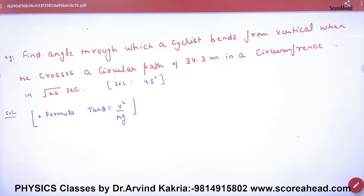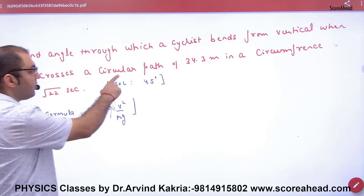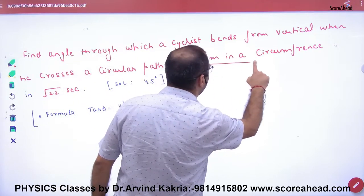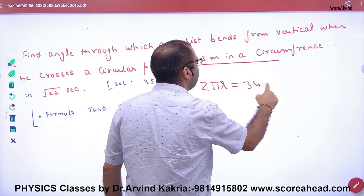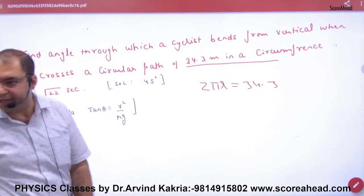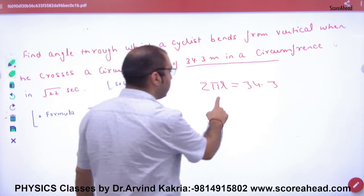So, bending of cyclists. And what is given? Circular path of 34.3 circumference. Circumference means what is given? 2 pi r. What is step clear?